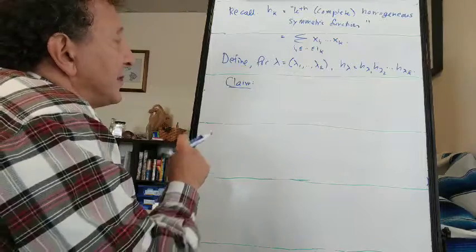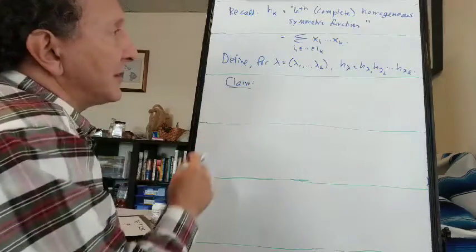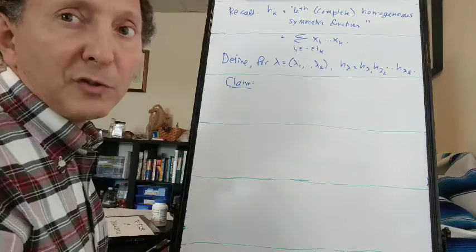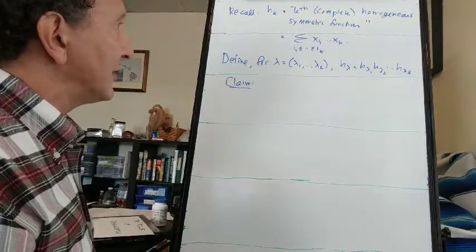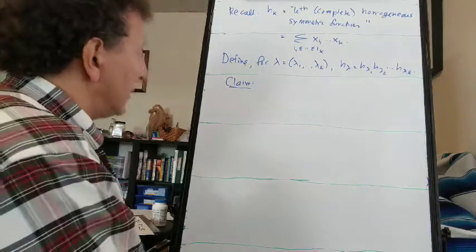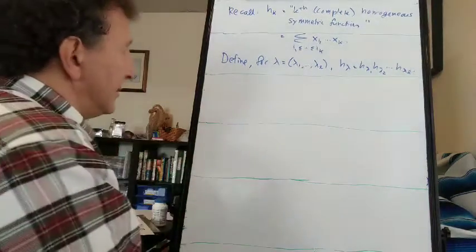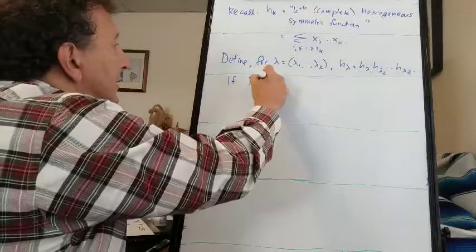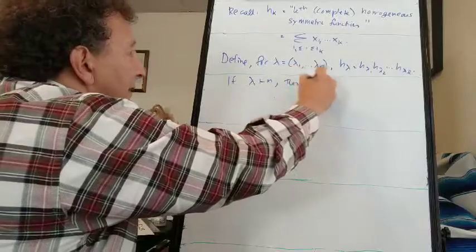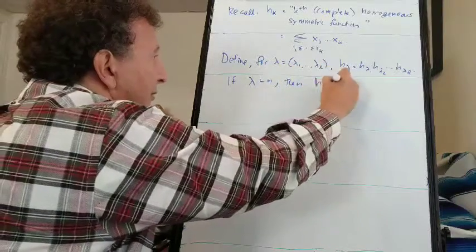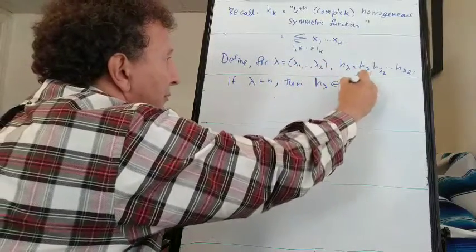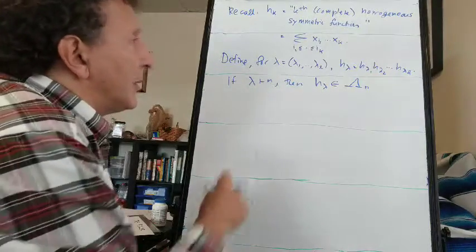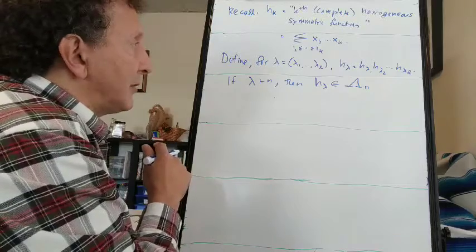So the question is: how do we express the homogeneous symmetric functions in terms of the monomial symmetric functions — the monomial symmetric functions being the most natural basis of Lambda_n? Now, if lambda is a partition of n, then h_lambda belongs to capital Lambda_n.